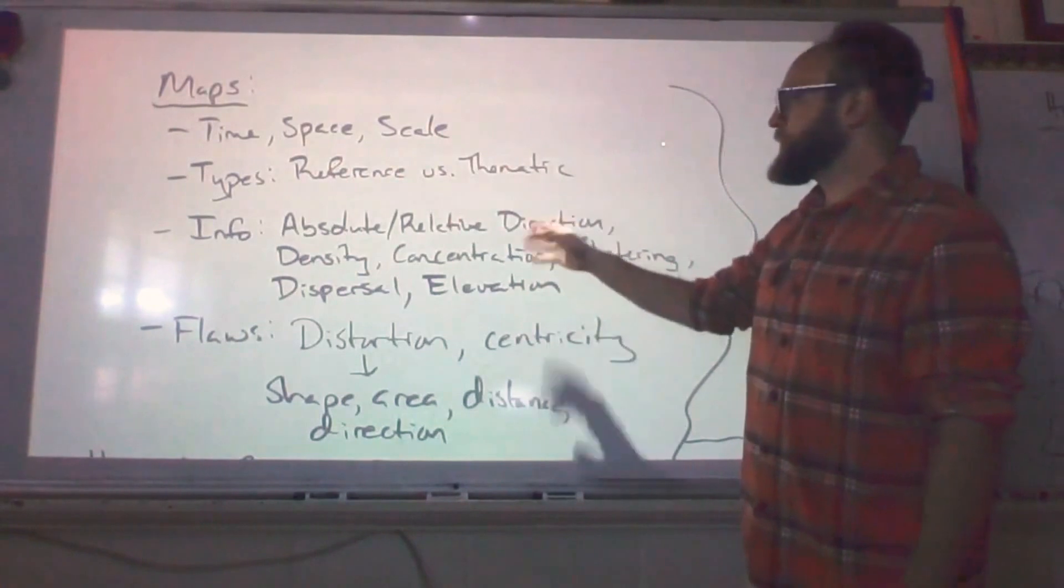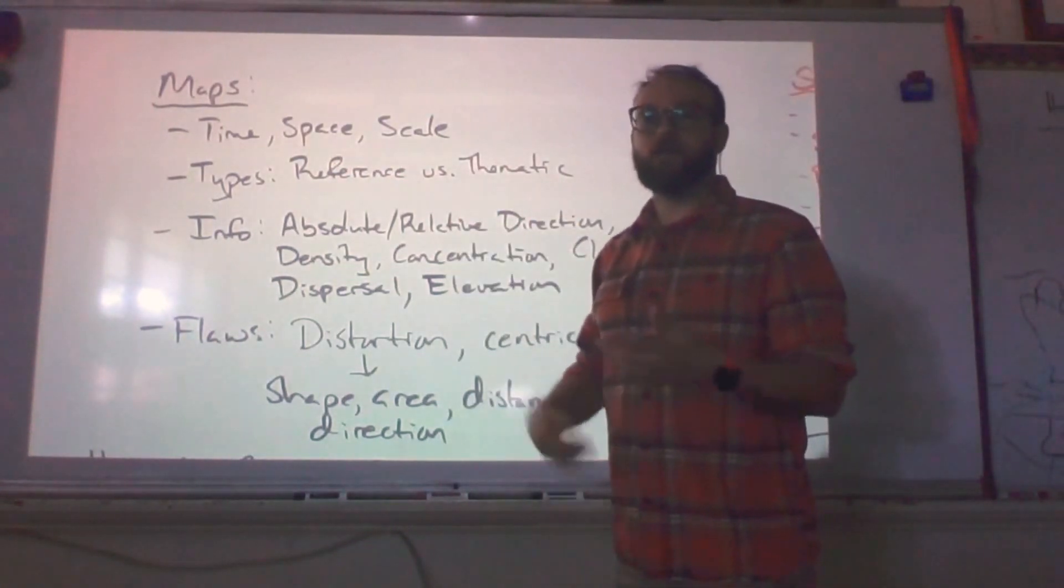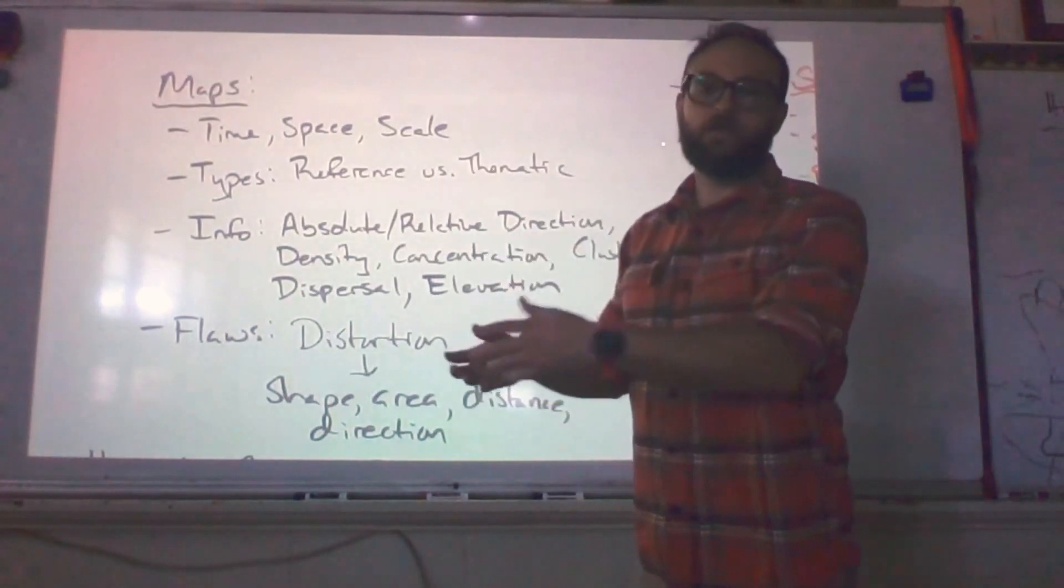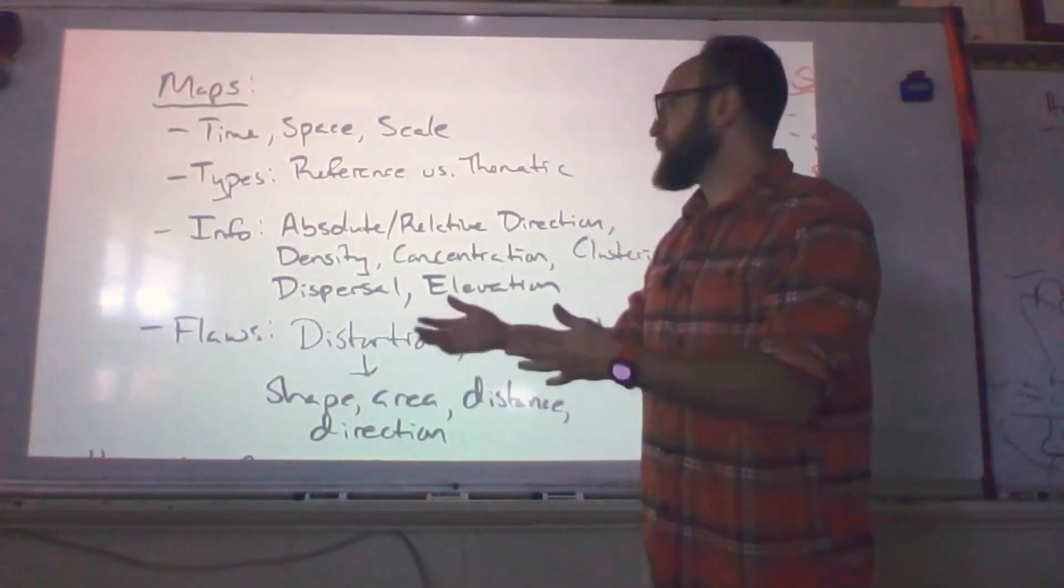Information. So absolute and relative direction. Absolute would be latitude and longitude. This is exactly where you go coordinate wise. And relative would be, alright, this classroom is closer to this other classroom. So it's relative to this other object.